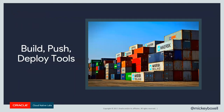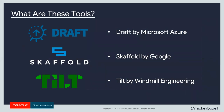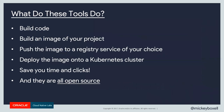The tools I'm going to talk about are: Draft by Microsoft Azure, Skaffold by Google, and Tilt by Windmill Engineering. What do these tools have in common? They're all used to build code — they can hook into existing Dockerfiles and some have additional build options. They allow you to build an image, push it to a registry service of your choice, and deploy it to a local or remote Kubernetes cluster. Fundamentally, all of them help you save time and clicks. And every single one of them is open source, so you can file PRs and make changes yourself.